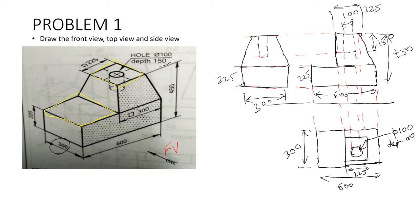You are clearly indicating the dimensions at right. This depth is 150 and this diameter is 100. The overall height is 450. You can also mention the overall height is 450. You have to mention all the dimensions in your right-hand side view.